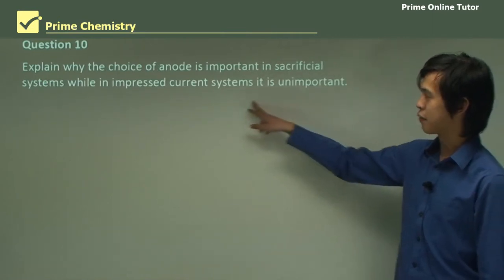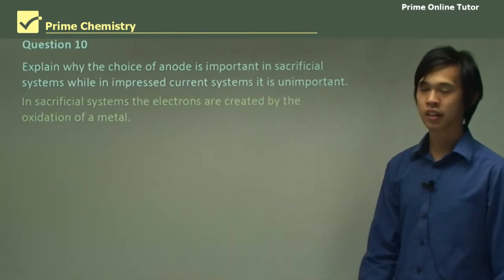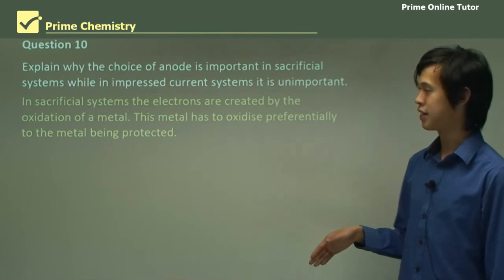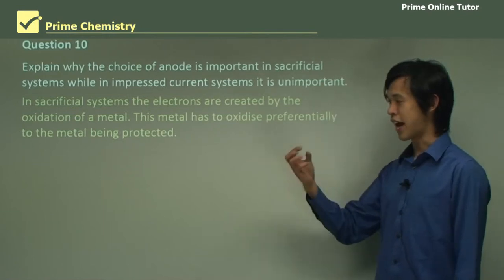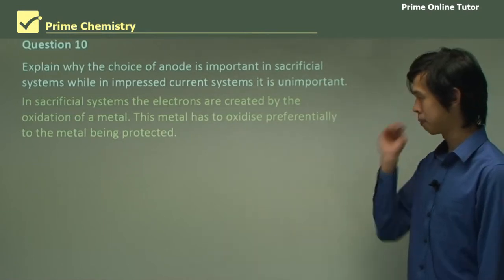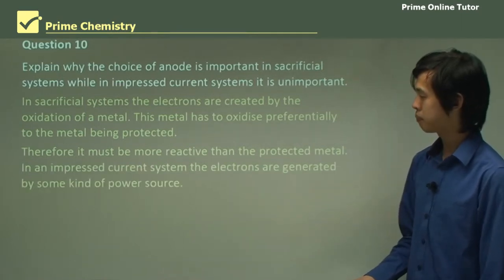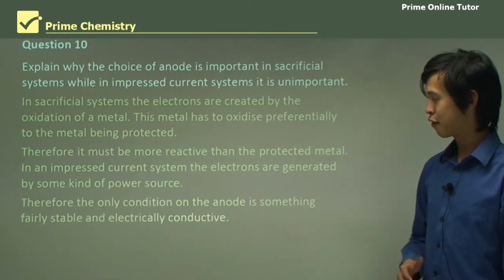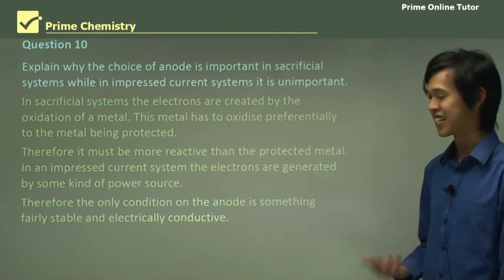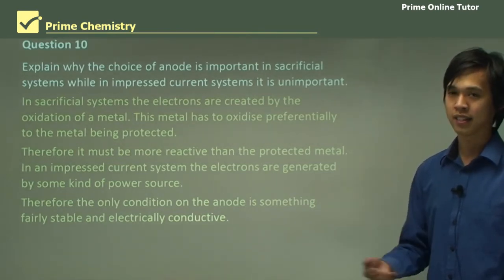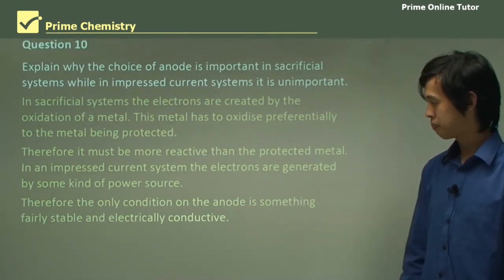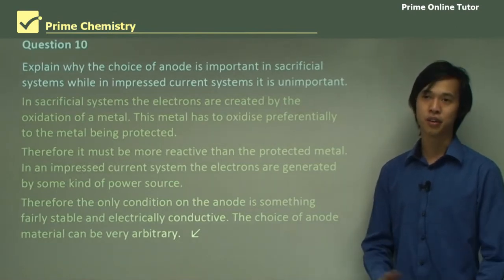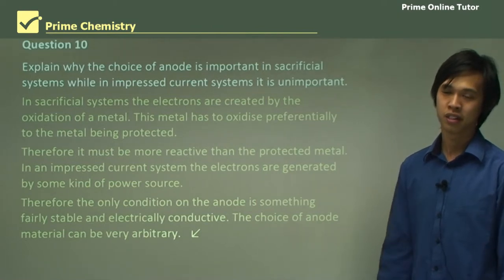Explain why the choice of anode is important in sacrificial systems but unimportant in impressed current systems. In sacrificial systems, electrons are created by the oxidation of a metal, so that metal must oxidize preferentially to the metal being protected — therefore it must be more reactive than the protected metal. In an impressed current system, electrons are generated by a power source, so the only condition on the anode is that it be fairly stable and electrically conductive. The choice of anode material can be very arbitrary — many times on ships, they simply use old engine parts that are no longer usable as the anode for the system.